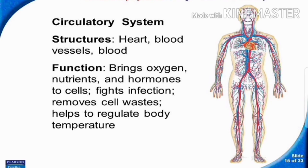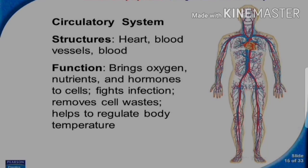Next is the circulatory system. It contains the heart, blood vessels, and blood. The function of the circulatory system is to bring oxygen, nutrients, and hormones to cells, fight infection, remove cell waste, and help regulate body temperature. Its main function is supplying oxygen and food to all cells.